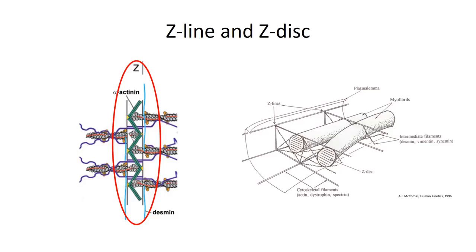The last part of the sarcomere to discuss is the Z-line. Alpha-actinin is another coiled-coil protein that runs perpendicular to the thin filaments, anchoring them in place on either side of the Z-disc. In addition, a number of intermediate filaments project from the Z-disc of one myofibril to another, anchoring them together. Importantly, these intermediate filaments also anchor themselves to transmembrane proteins that in turn are anchored to proteins within the extracellular basement membrane — we'll return to this concept in just a few minutes.